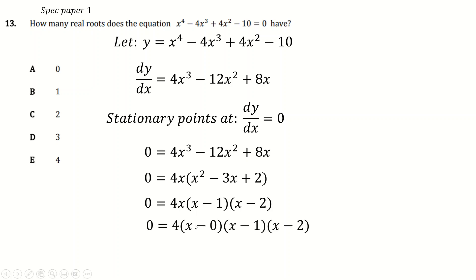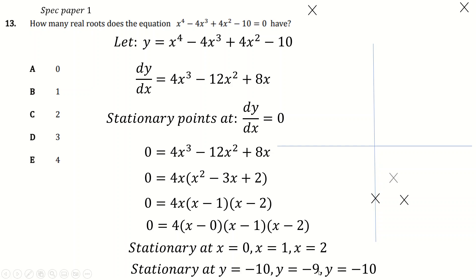And you get x is 0, 1, and 2, which of course you can substitute back into the original equation to find the y-coordinates: -10, -9, and -10 respectively. When you draw it, it's a quartic so it starts up here and ends over here somewhere because this x⁴ term outweighs everything else and it's always positive. Then you have these turning points at 0, 1, 2 with y-values -10, -9, -10. Put a line through them because they're turning points.